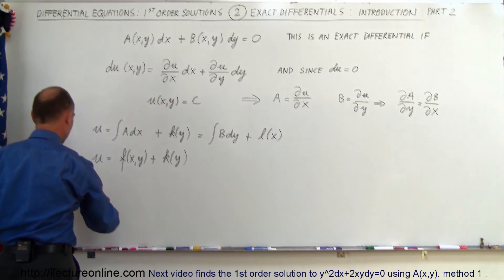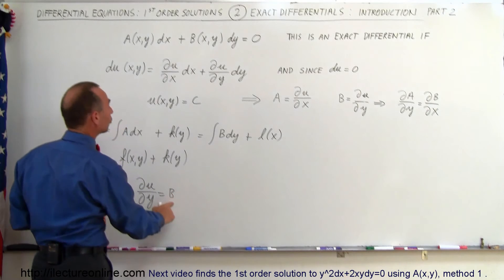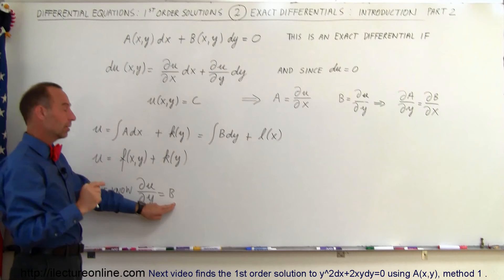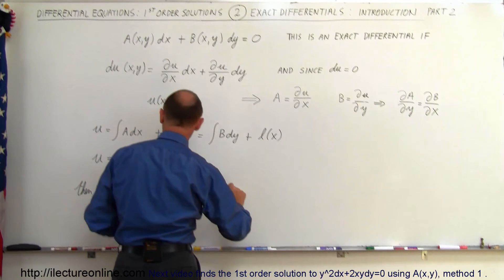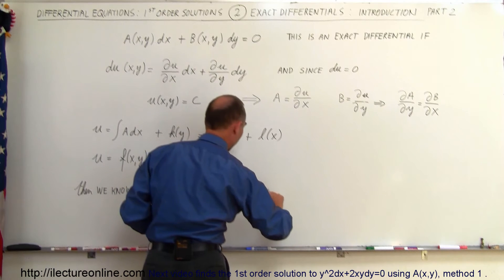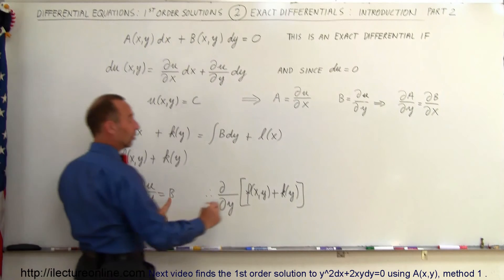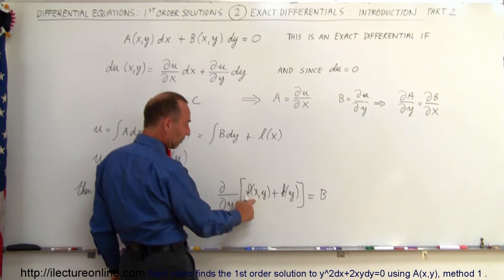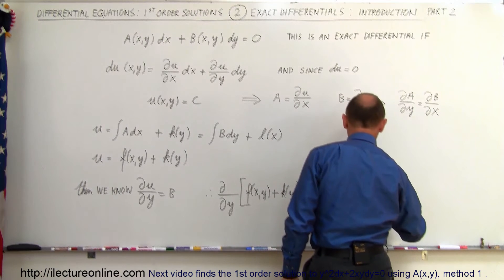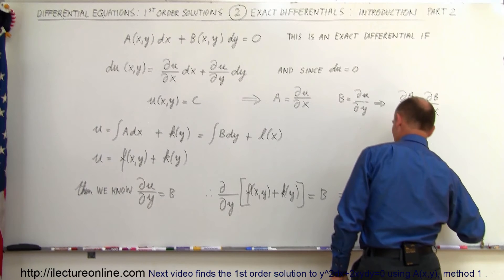We know that the partial of u with respect to y must equal b, and we know what b is because it's right there in the equation. So we take the partial of our expression for u with respect to y — that is, the function of x and y plus the function of y — and that must equal b. It's easy to take the derivative of this with respect to y, and this will be written as the partial with respect to y of f(x,y) plus the partial with respect to y of k(y).